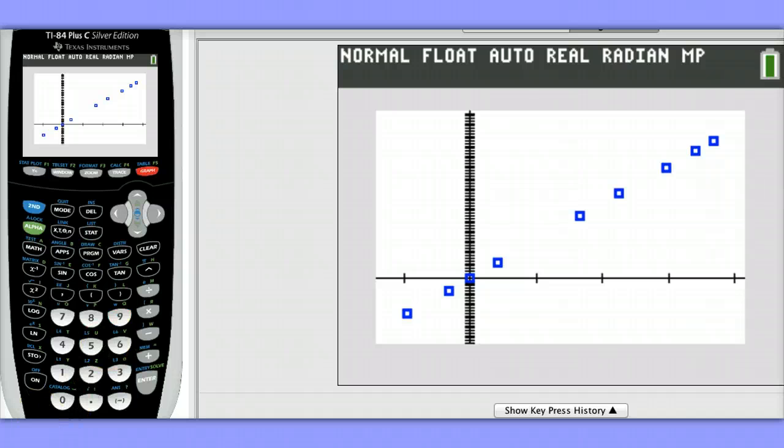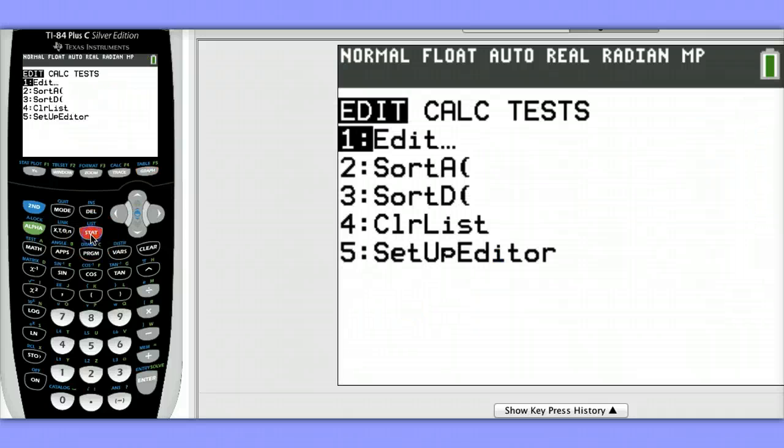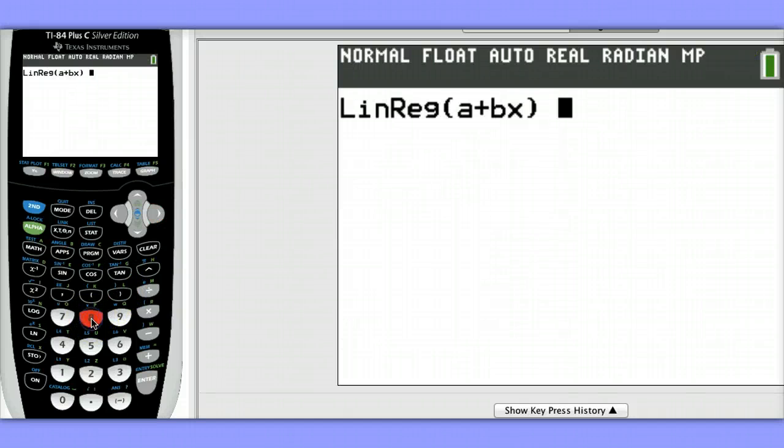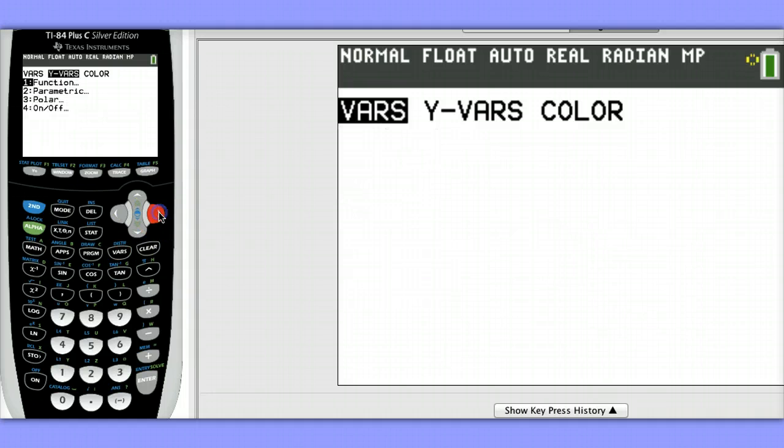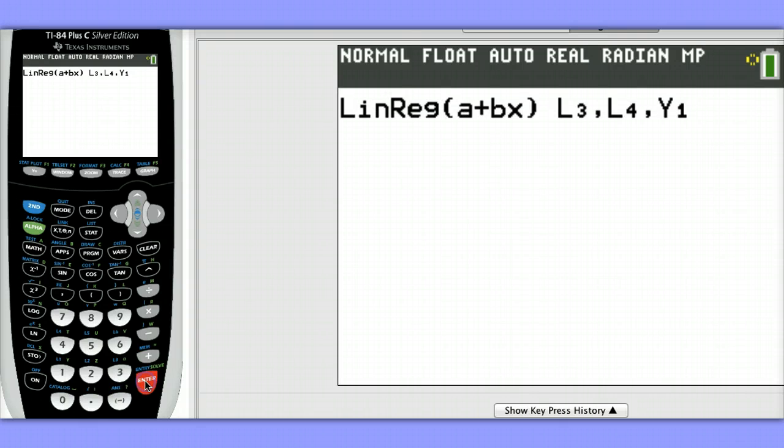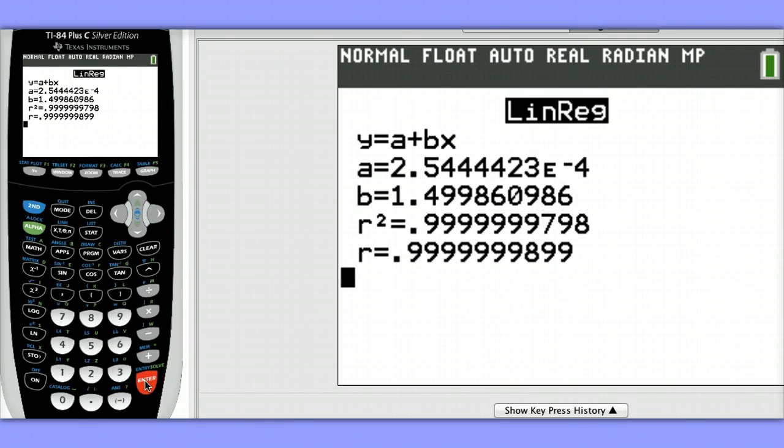Let's create a linear model for our transformed data. To do this, hit Stat, go over to Calc, and we'll choose Option 8, Y equals A plus BX for linear regression. My Xs are stored in List 3 now, it's the transformation of our original X values. Our Ys are in List 4, that's our transformation of our original Y values. And I'm going to store my equation in Y1. So I hit VARS, go over to YVARS, choose Enter On Function, and then Y1.